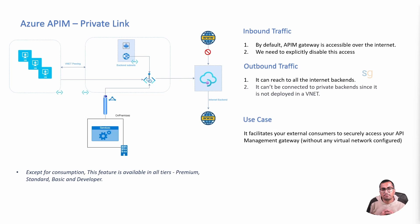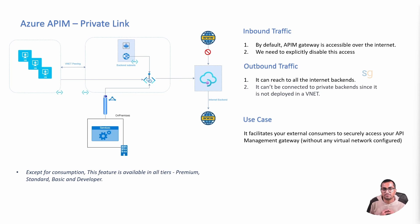Finally, Azure API Management with private endpoints, which is still in preview. The private endpoint feature in Azure allows you to expose your API Management service on a private IP within a VNet. This setup is similar to internal mode but with one significant advantage: it enables secure direct access from other private networks, including those outside Azure. In other words, private endpoint is all about extending that secure bubble around your API Management service. I have made another video on this topic and will leave the link in the description below.